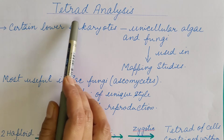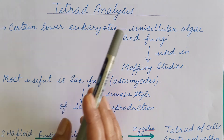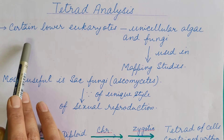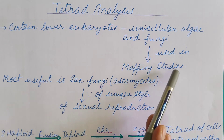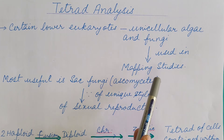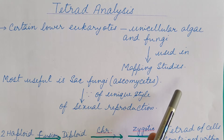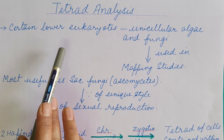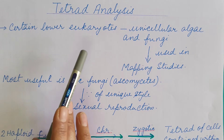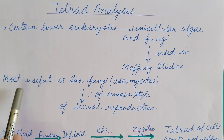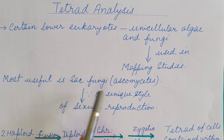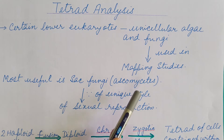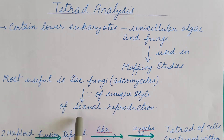Hello friends. Today we are going to discuss about tetrad analysis. Some of the lower eukaryotes, for example unicellular algae and fungi, are used in mapping studies or genetic mapping. These spend most of the part of the life cycle in haploid state. Among them, the most useful in genetic mapping is sac fungi or ascomycetes, because it has a unique style of sexual reproduction.